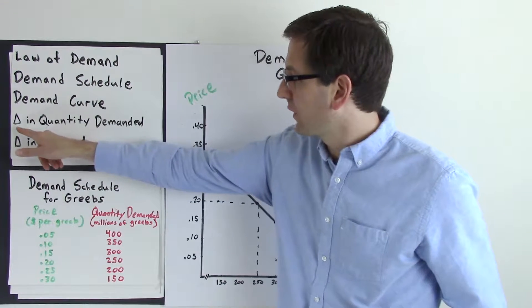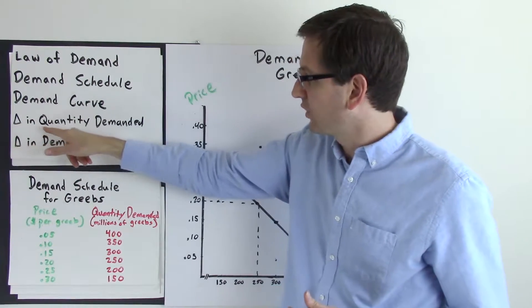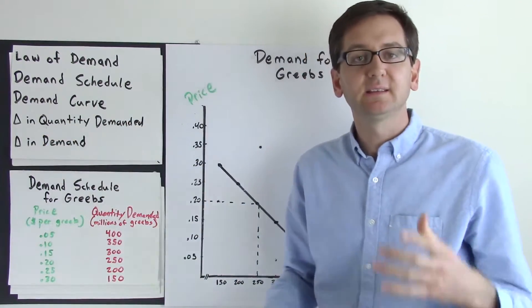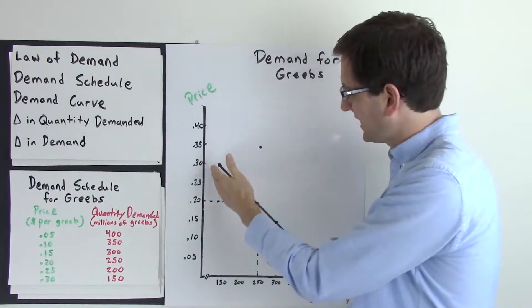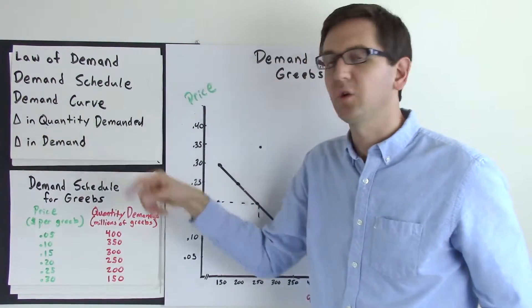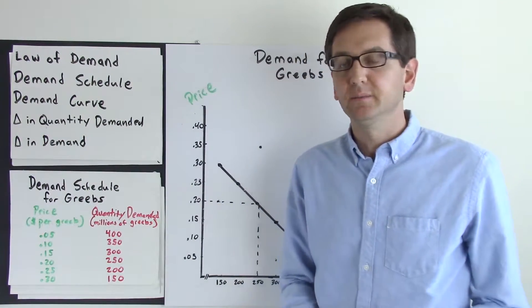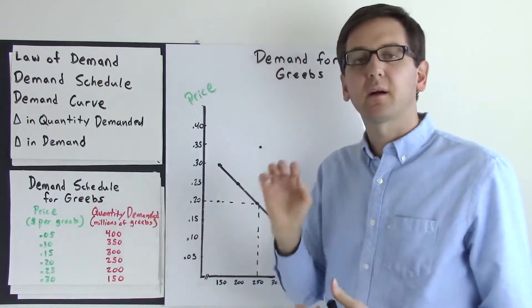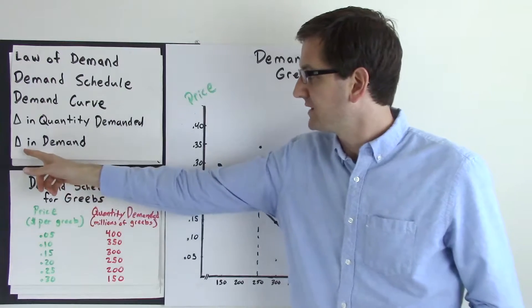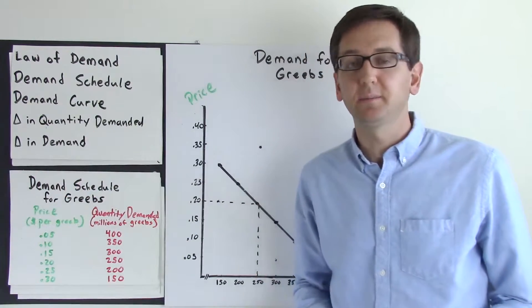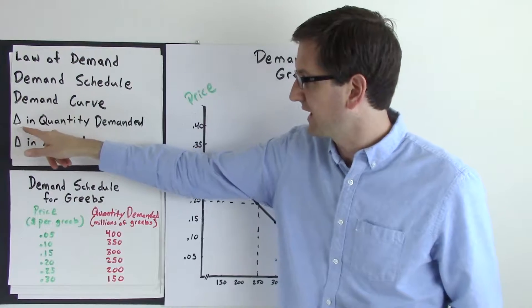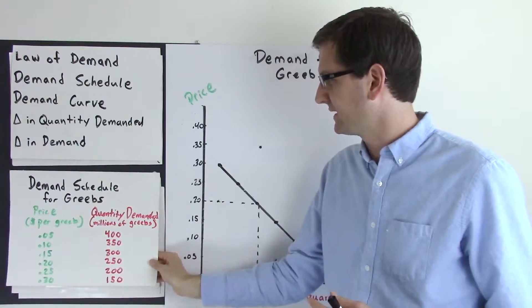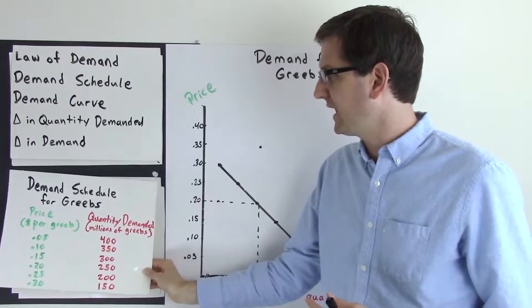Therefore, we can say that the determinant of a change in quantity demanded is price. If there is a change in price, that will cause a change in quantity demanded. But let's take a look at a change in demand as a whole, because there are five determinants that cause a change in demand, whereas there is only one determinant that causes a change in quantity demanded — and that's price.